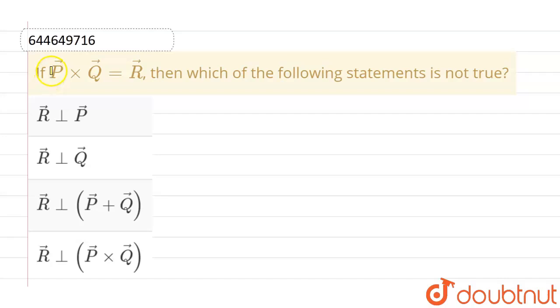Hello everyone. If we talk about this question, the given question is: if P-vector cross Q-vector equals R-vector, then which of the following statement is not true?